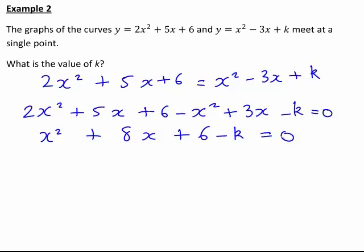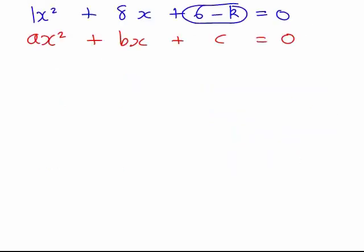This is of the same form as the previous one. This equation is in the form ax squared plus bx plus c equals 0. We've got 1x squared. If this is of the form ax squared plus bx plus c equals 0, then a is 1 in this case, b is 8, and you'll notice I've circled the 6 minus k here. This is because there's no x contained in either of these terms, and we're thinking of our expression as a function of x. Therefore, c equals 6 minus k.